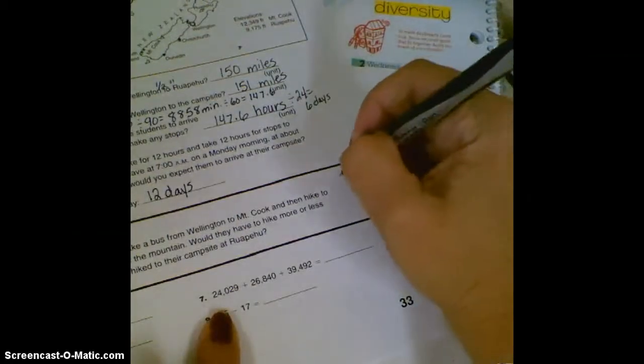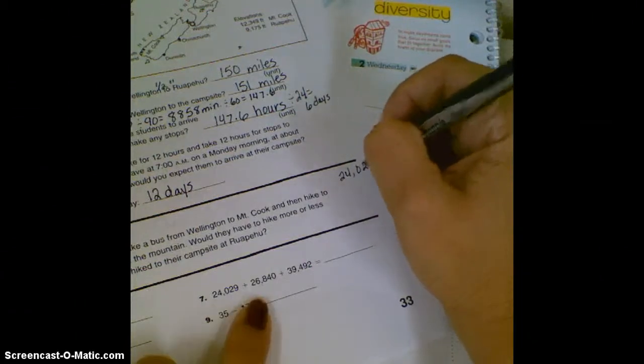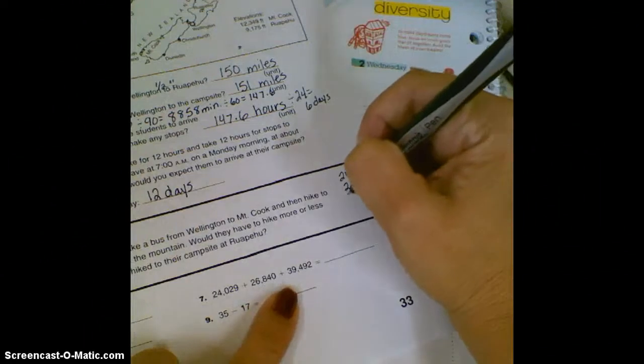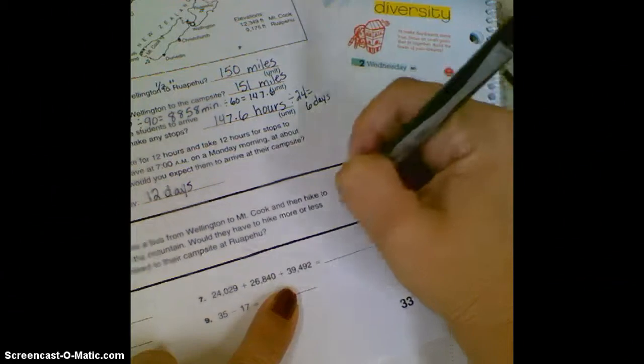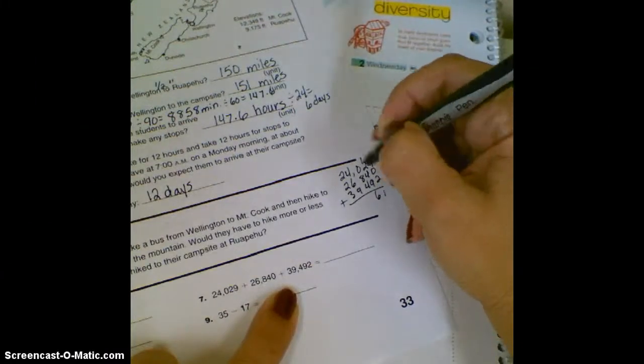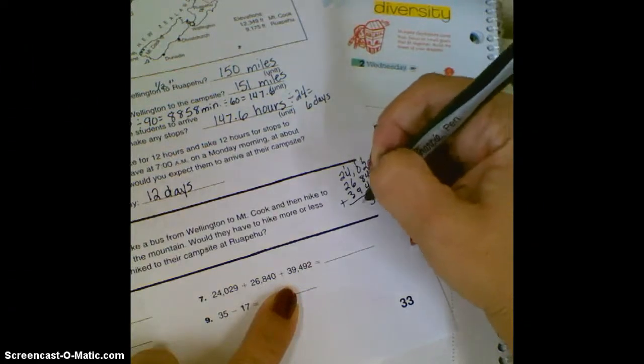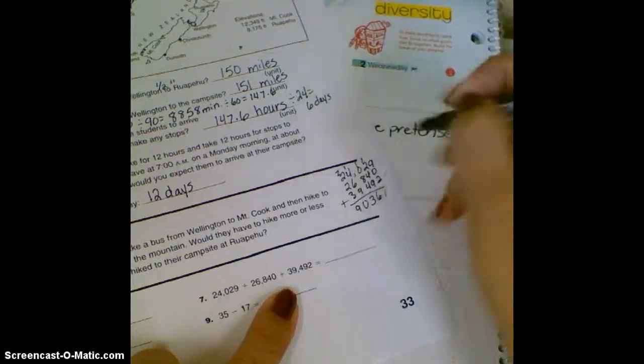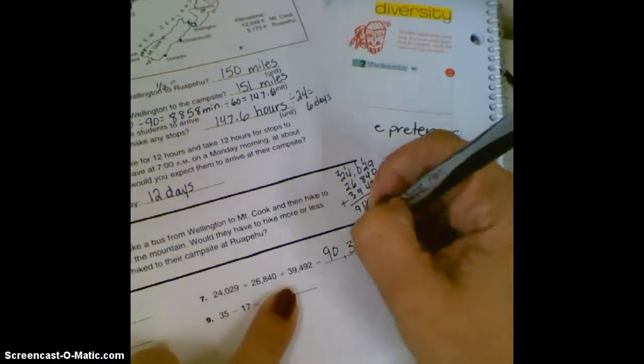This one we're just straight adding. Be careful to write them down correctly. Easy to make that mistake when you've got so many digits. Alright, let's add straight down. And I got 90,361.